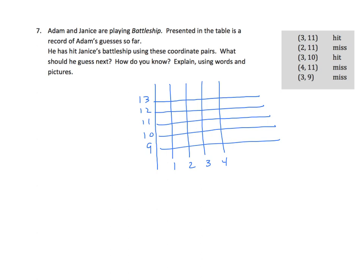So what do we have here? 3, 11. We have a hit. So I'll put an X there for my hit. And I have 2, 11. That's a miss. I have 3, 10. That's a hit. And I have 4, 11. That's a miss. And I have 3, 9. That's a miss.